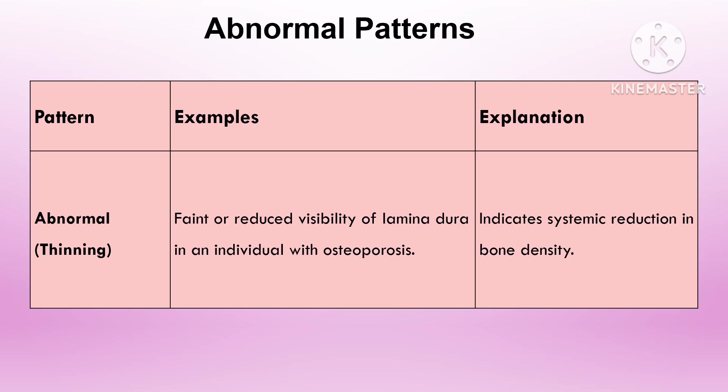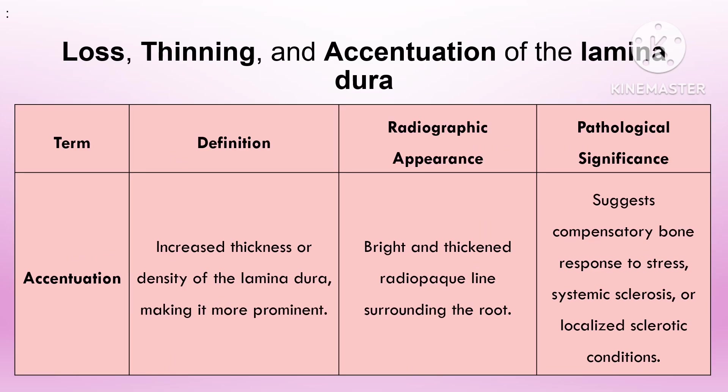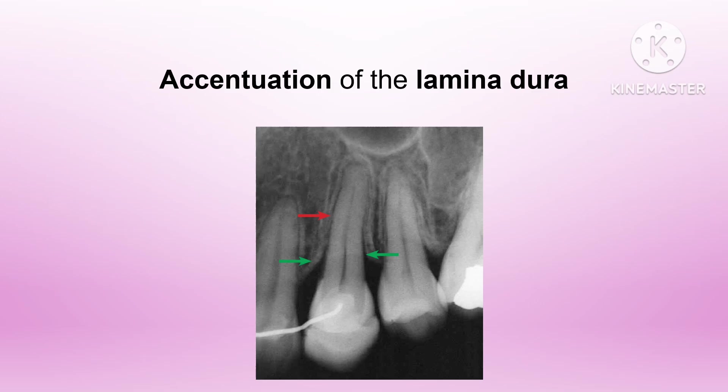A second pathological change is thickening of the lamina dura. This may be due to increased occlusal load, as excessive biting forces stimulate bone deposition, thickening the lamina dura. It can also occur in sclerotic conditions like Paget's disease, which may affect the density of the lamina dura. Thickening suggests an adaptive response to stress or underlying systemic bone conditions.